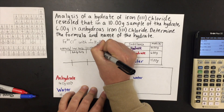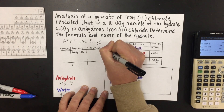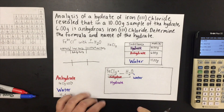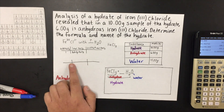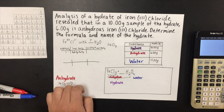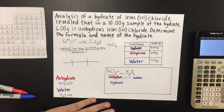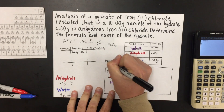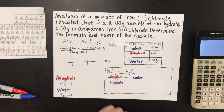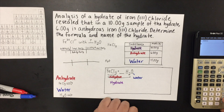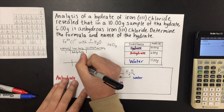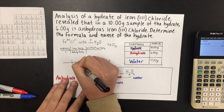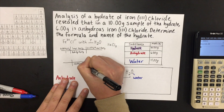So we divide 6 grams by 162.2 grams per mole, and we get 0.0369 moles of iron(III) chloride in this sample. We have to do the same thing for water. Water is H2O, so hydrogen is 1.008 — we multiply that by 2 — then we add the molar mass of oxygen, which is 15.99. We get 18.006 grams per mole of H2O.